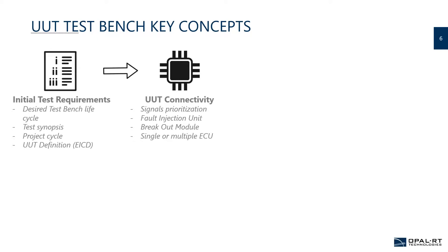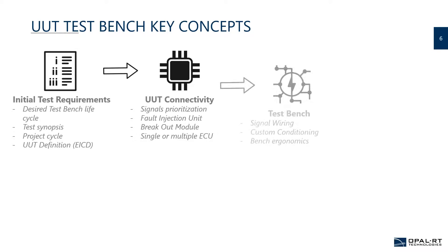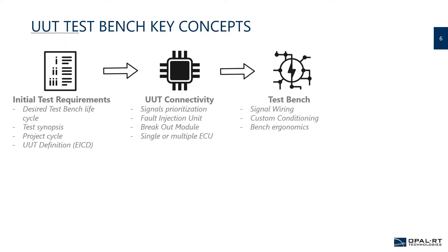Once we understand the UUT connection, we ask questions about fault injection, breakout modules, whether we want to test a single ECU or have flexibility for different programs, and how to prioritize signals — specifically, whether all signals will be needed for the hardware-in-the-loop system to be tested. From there we go to the test bench design phase: wiring, signal conditioning, and the economics of the test bench.